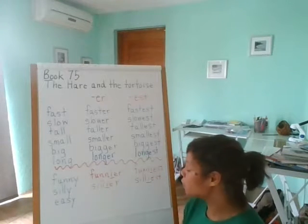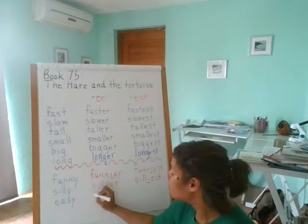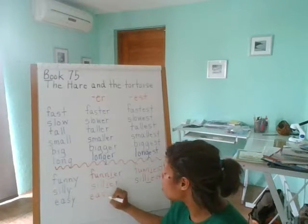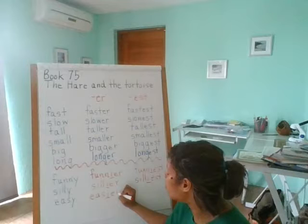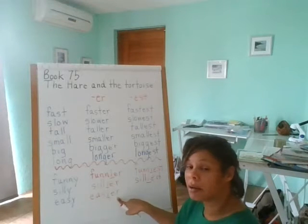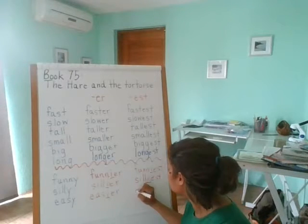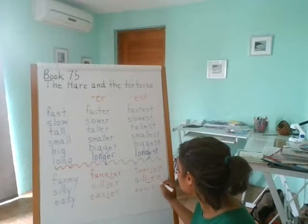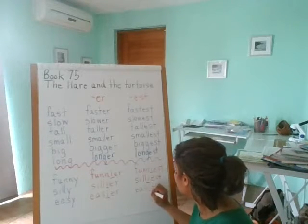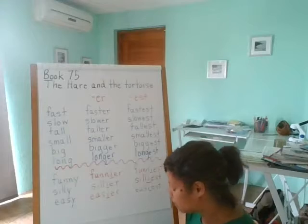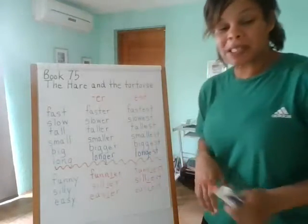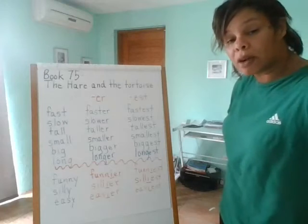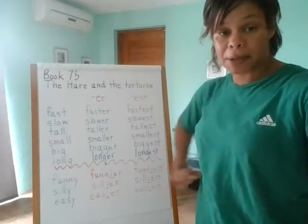The last word is easy — same pattern. Drop the y, add i-e-r: easier. Drop the y, add i-e-s-t: easiest. So these are some spelling patterns to pay attention to as you're reading so that you know the correct pronunciations, and also for your spelling.